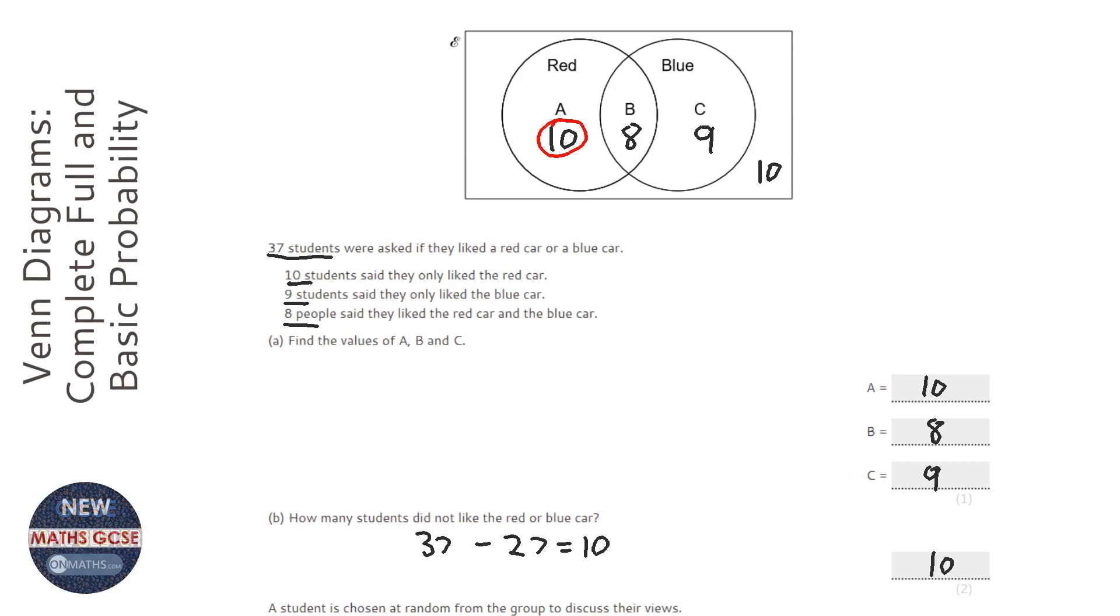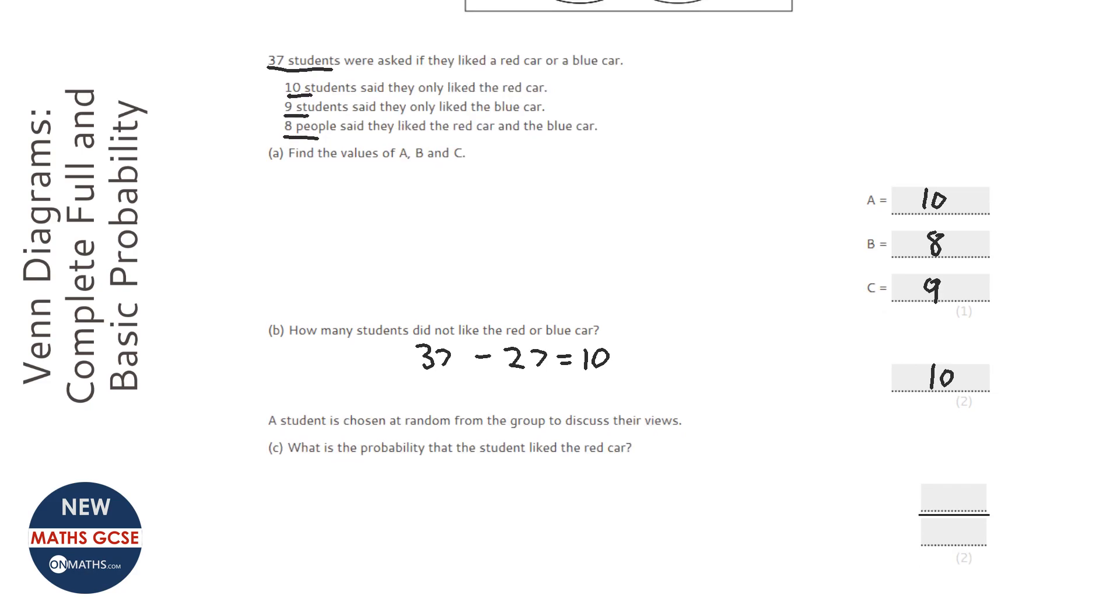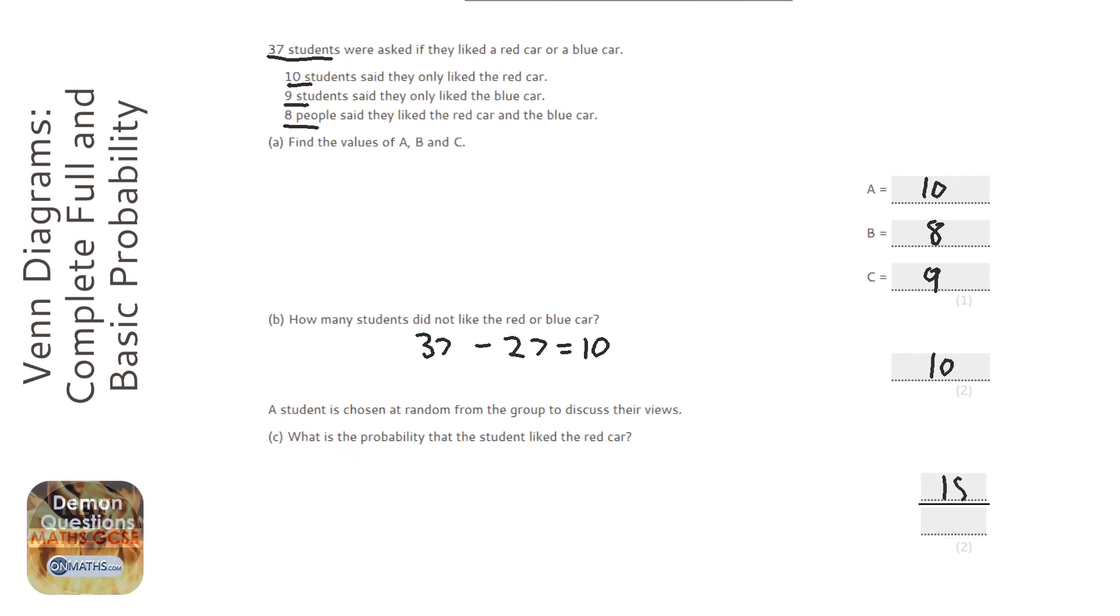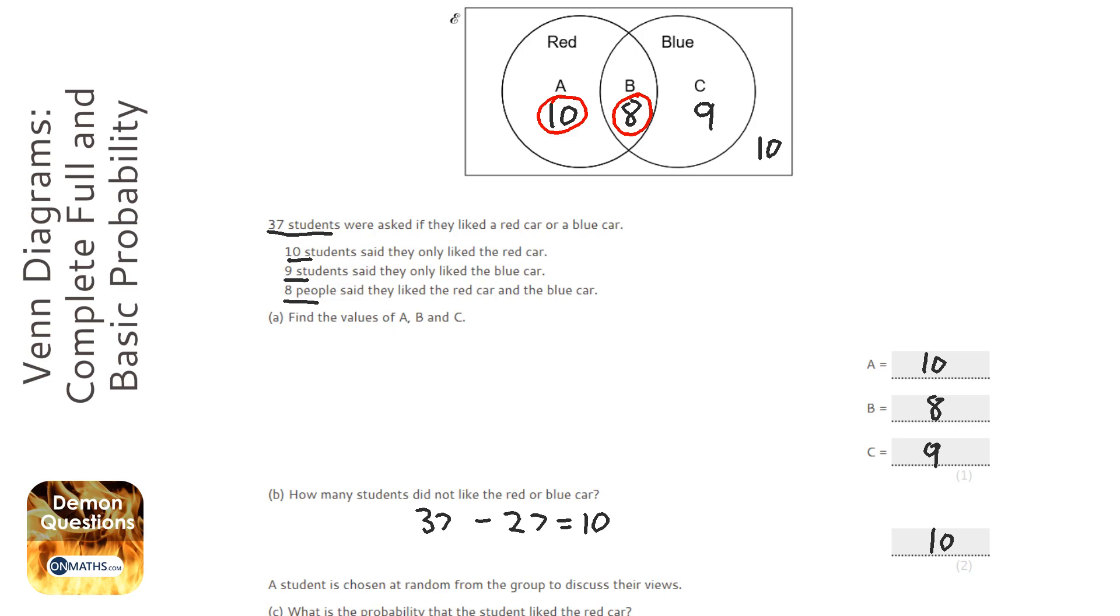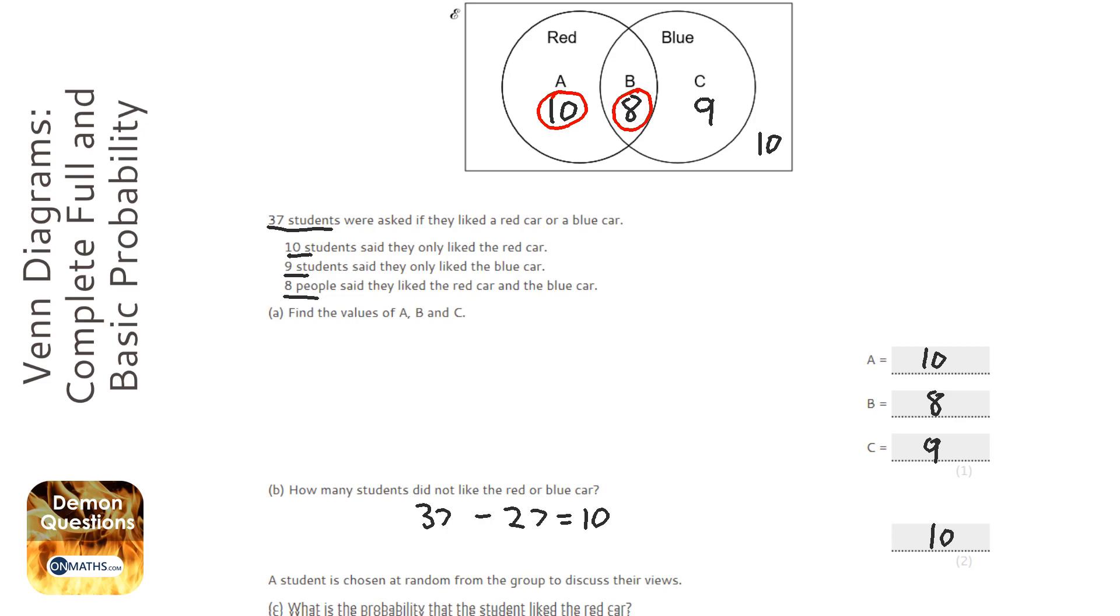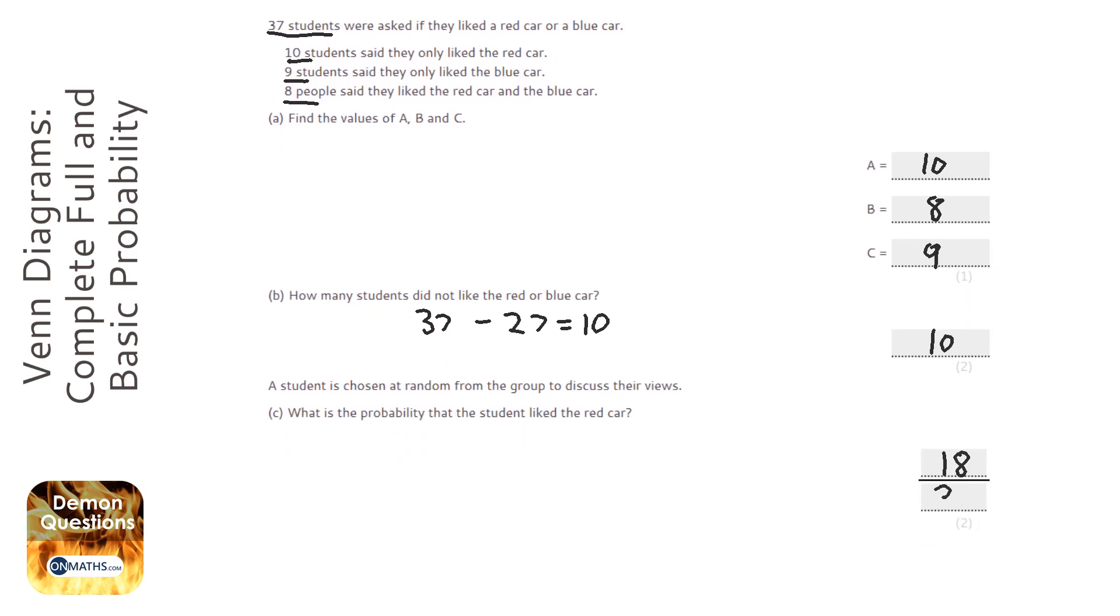There's 10 people who only liked the red car, and there's 8 people who liked the red car and the blue car. So in total that's 18 people who liked the red car, just 8 of them happen to like the blue one as well. And in total there's 37 students, so it would be 18 over 37.